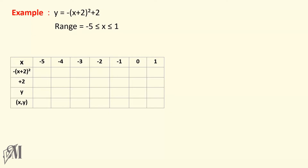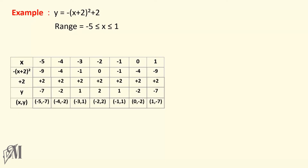Here the first row is minus (x plus 2) squared. So when x equals minus 5, minus 5 plus 2 is minus 3, and minus 3 squared is 9. Since we need the minus of (x plus 2) squared, the value becomes minus 9. Likewise we fill in the table, then plot the graph.